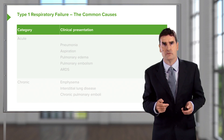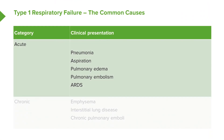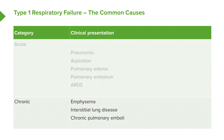Common acute causes of type 1 respiratory failure include pneumonia, pulmonary aspiration, pulmonary edema, large pulmonary embolus, and ARDS. Chronically, patients can develop type 1 respiratory failure due to severe interstitial lung disease, chronic pulmonary emboli leading to significant pulmonary artery damage, and severe pulmonary hypertension. The emphysematous 'pink puffer' phenotype of COPD also tends to develop type 1 respiratory failure.